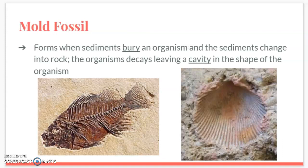First, mold fossils. These form when sediments bury an organism and the sediments change into rock. The organism then decays, which just leaves a cavity in the shape of the organism. I like to think of these as an ice cube tray — the mold fossil would be the tray itself. You have the shape of the ice cube but no ice. In these pictures we have the imprint of a fish and a shell, but all of the actual organism has decayed.